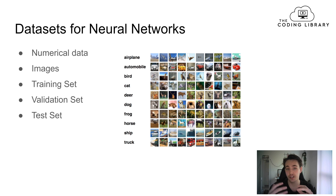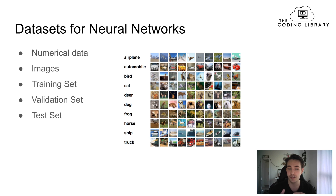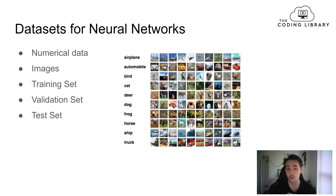In neural networks and machine learning in general, we have the training set, which is the actual data we give to our neural network during training. Then we have a validation set, which also gets passed to the neural network while it's training. After training, we validate how well our model performs using data the neural network hasn't seen before — to check for overfitting or underfitting. The training set is purely for training, the validation set is for validating, and then we have a test set, which is images the neural network hasn't seen, used to test its predictions.